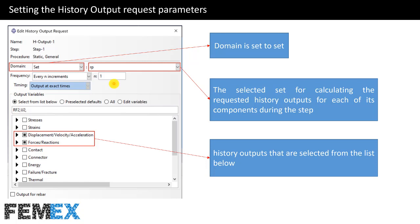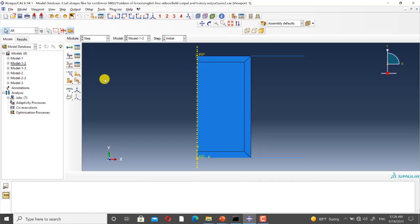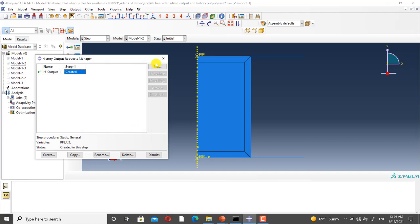Now I want to show you the edit history output request. As you can see, it is similar to the edit field output request, with fields for step name, domain, frequency, timing, and a list of history output requests. Here, the domain is set to a set, and the set selected is named 'rp'. In the step module, I click on history output manager.